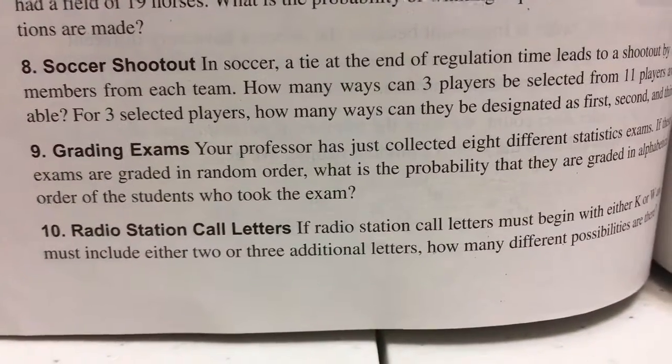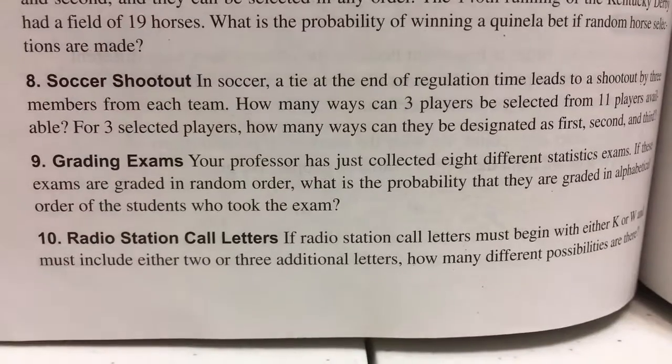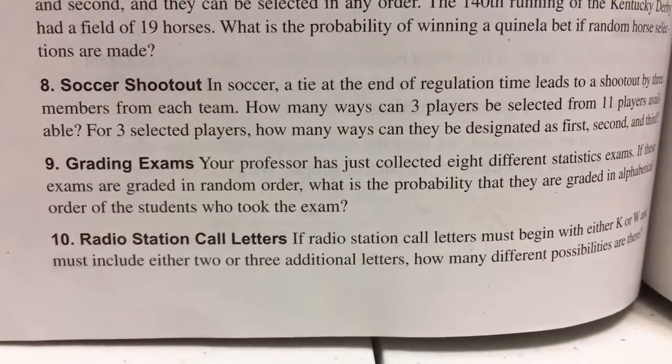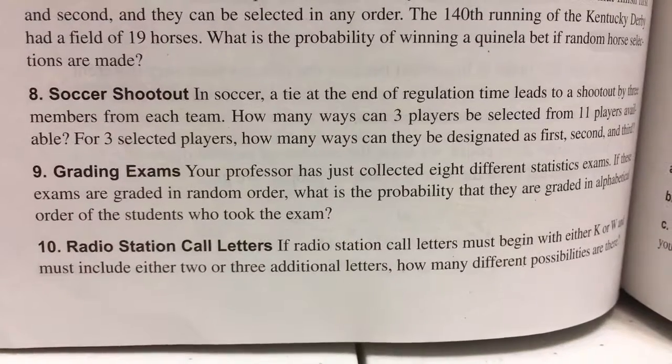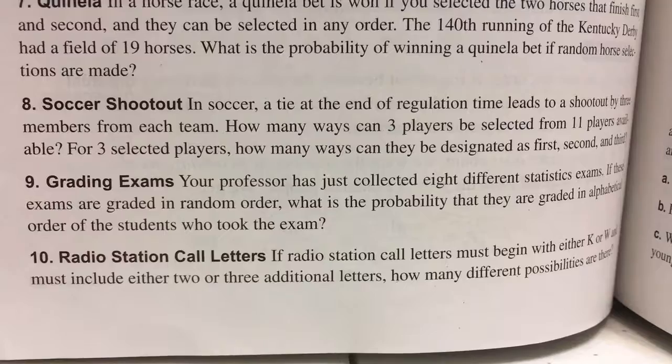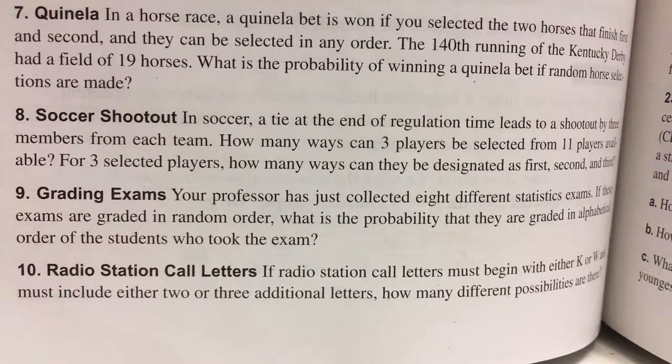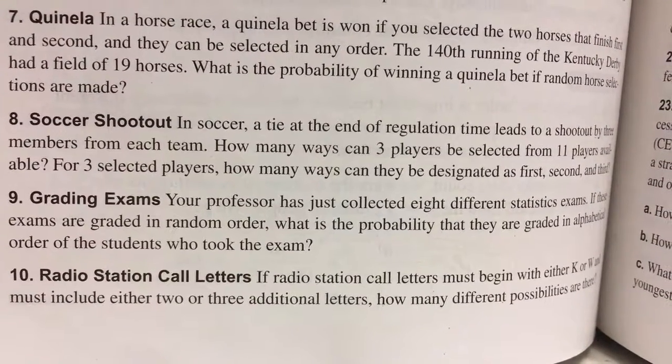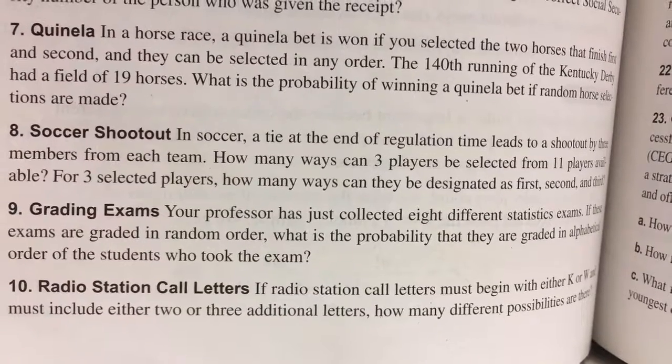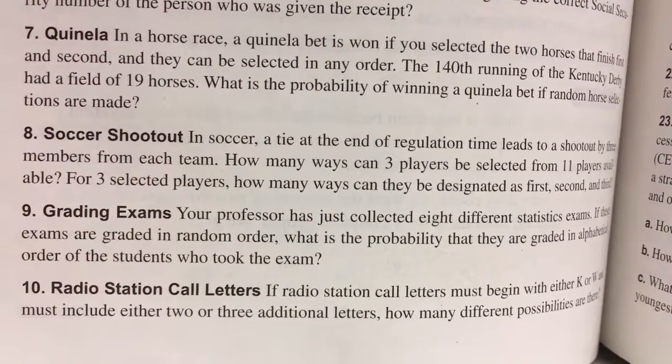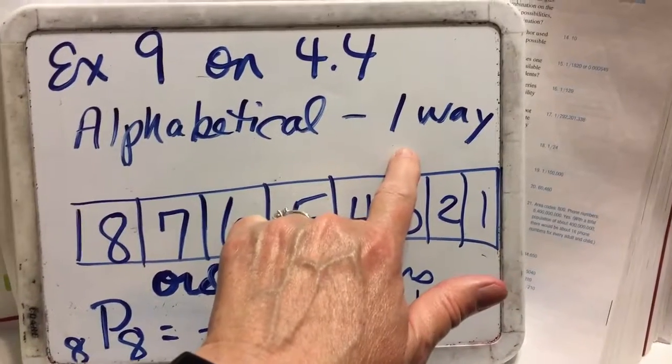The next one we're going to do is number nine, grading exams. Your professor has just collected eight different statistics exams. If these exams are graded in random order, what is the probability that they are graded in alphabetical order of the students who took the exam? We have eight exams, and we're talking about order mattering. Since the order matters, we're talking about permutation, and this one is one where replacement is not allowed because the exams can't be graded a second time.